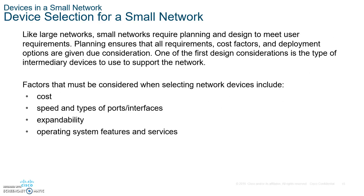Let's talk about device selection for something close to 20 to 50 users. Write this down: number one, think about cost — how much is your client willing to spend. Think about speed — do you want Fast Ethernet (100 Mbps) or Gigabit Ethernet (1000 Mbps). Think about scalability — are they going to expand? And consider operating system features like Voice over IP, VPNs, and IPsec.